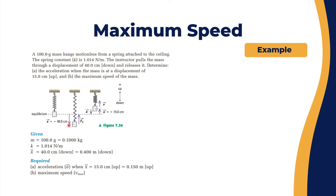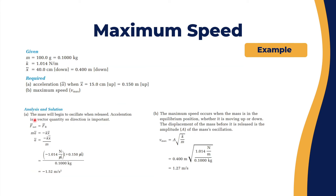Starting with part a, we can see the demonstration: the mass was pulled 40 centimeters down and retracted 15 centimeters above the equilibrium point. For the force analysis, F_net equals the restoring force, so mass times acceleration equals negative k times x. Therefore, acceleration equals negative k times x over m.